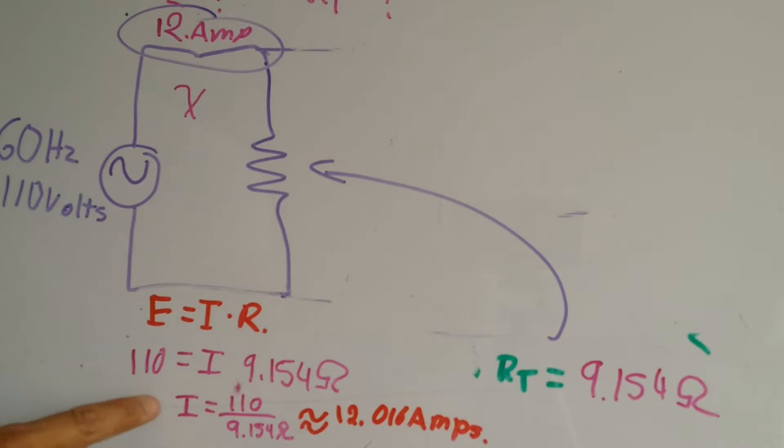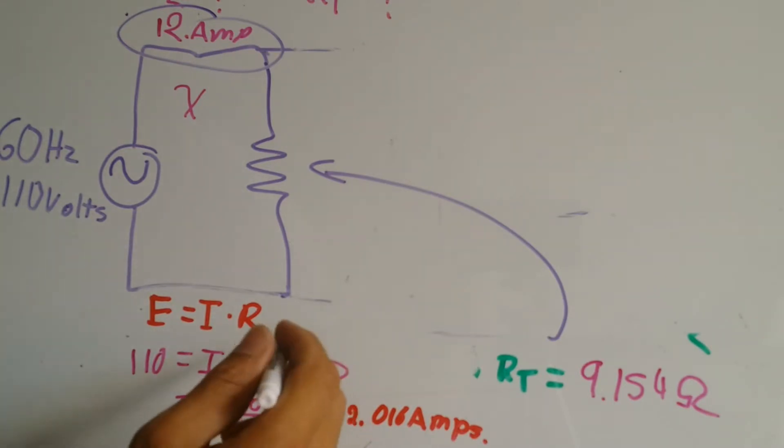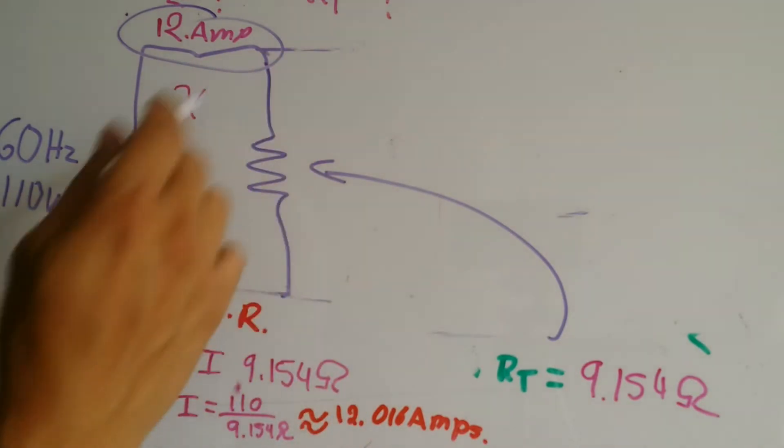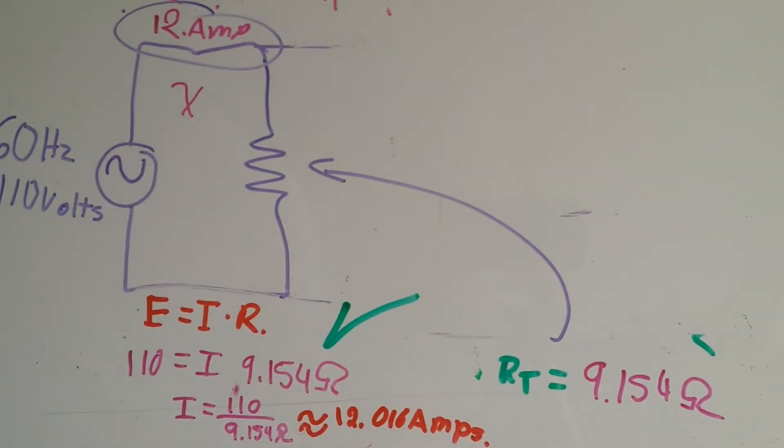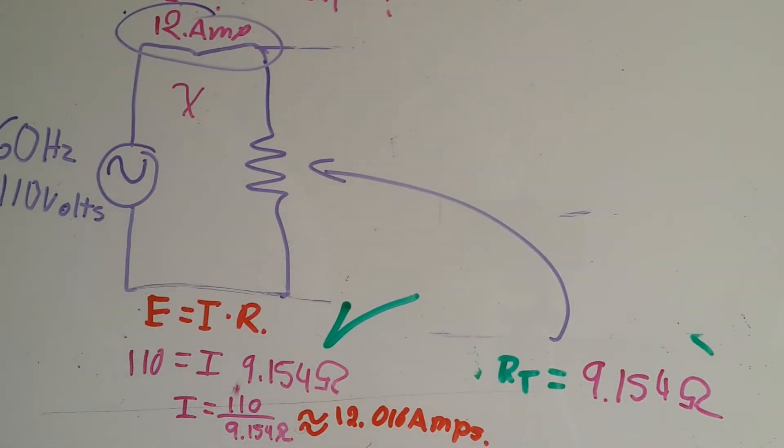When I replace, I get roughly 12.0016 amps, which is the same as when I just added the amperage. So definitely checks, that means we got effectively our inductance and our total resistance.